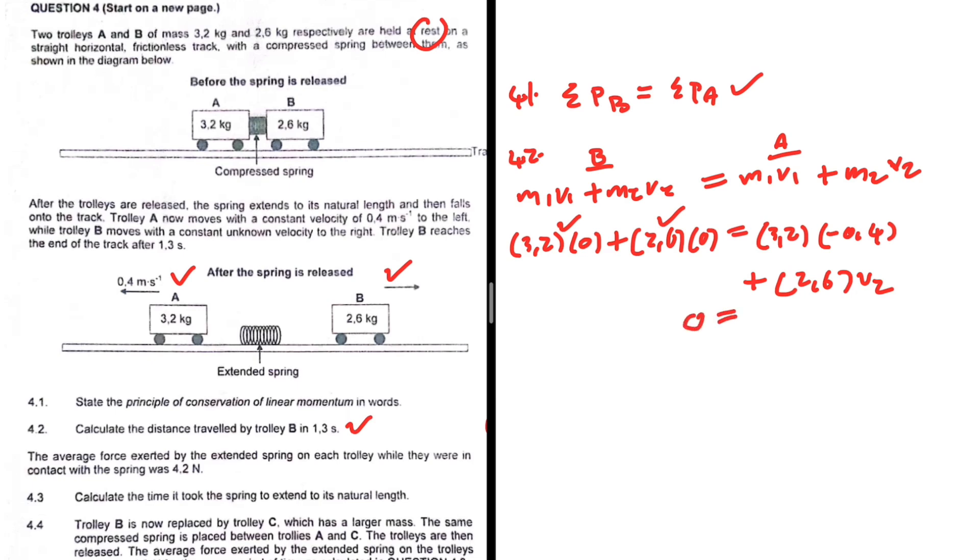Then on the right hand side, 3.2 multiplied by minus 0.4, that is minus 1.28, plus 2.6v2. It shall be obvious what we need to do in this case.